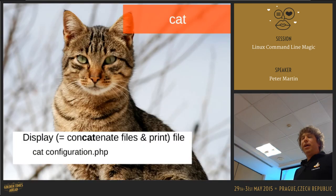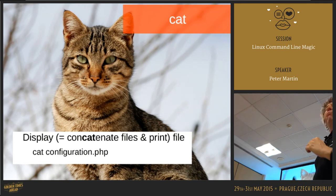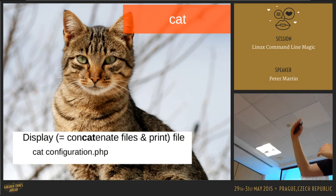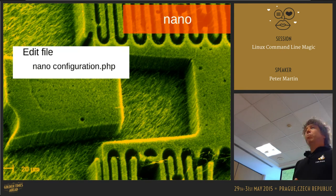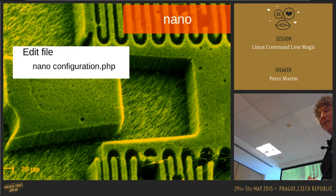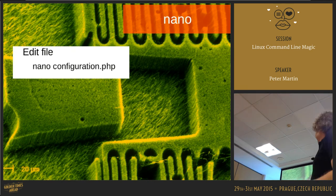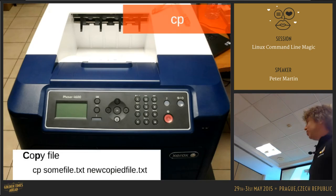'cat' stands for concatenate and lets you list the contents of a file — like 'cat configuration.php' shows the Joomla configuration file. If you want to change something in that file you can use 'nano'. If you're really hardcore you probably use 'vim' or 'vi' — but don't tell anyone on the internet — I use nano; it's easier for copying stuff.